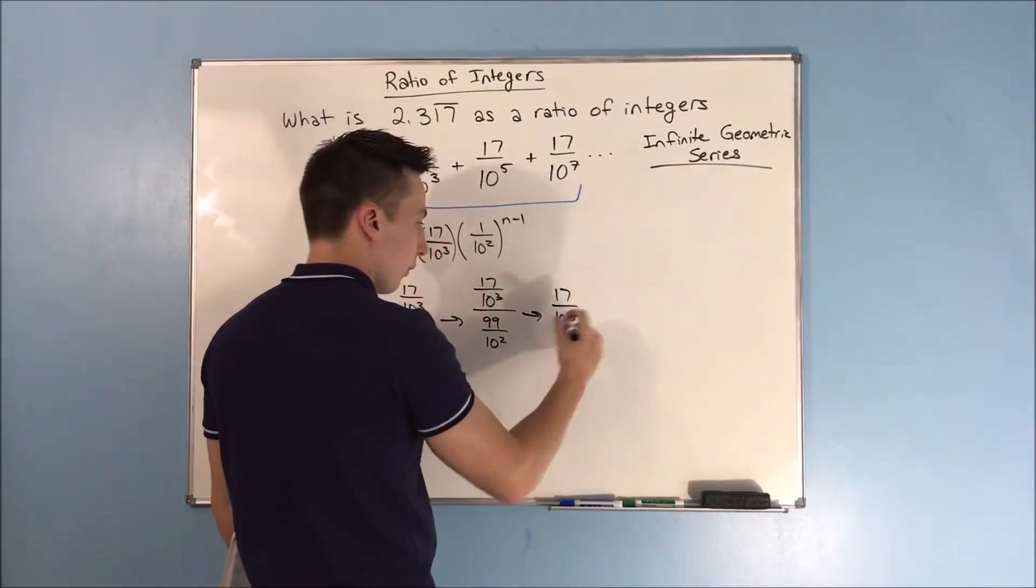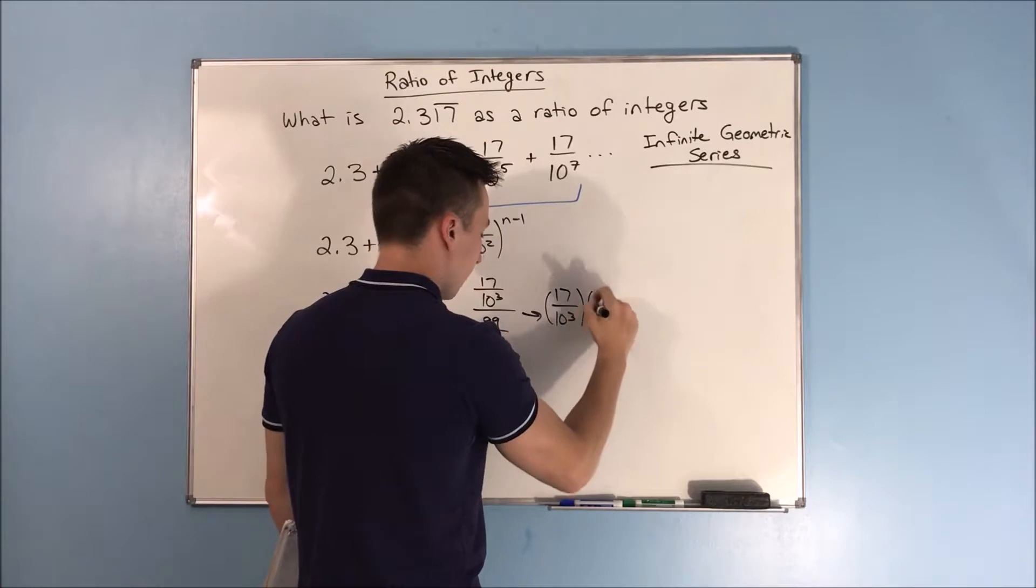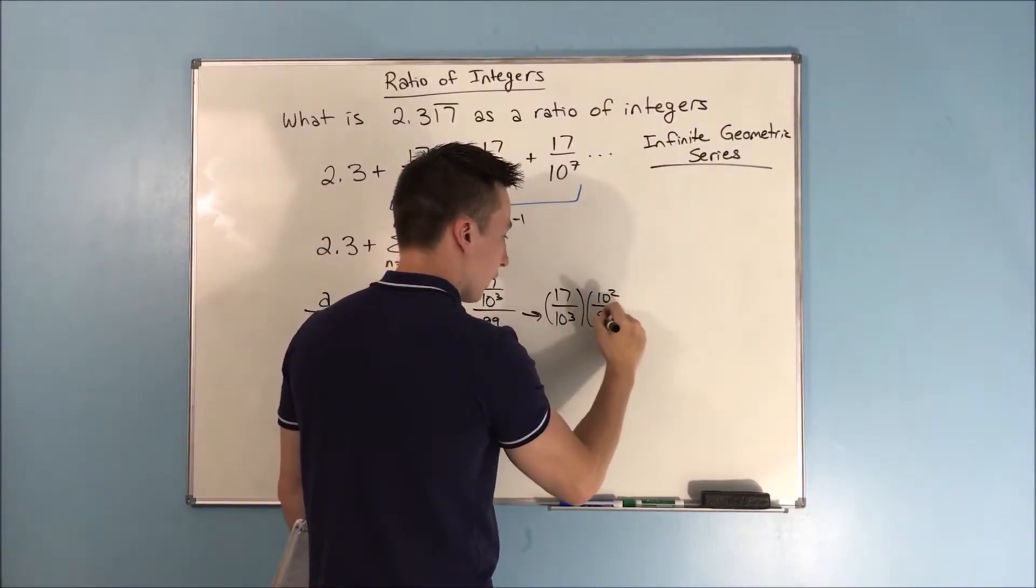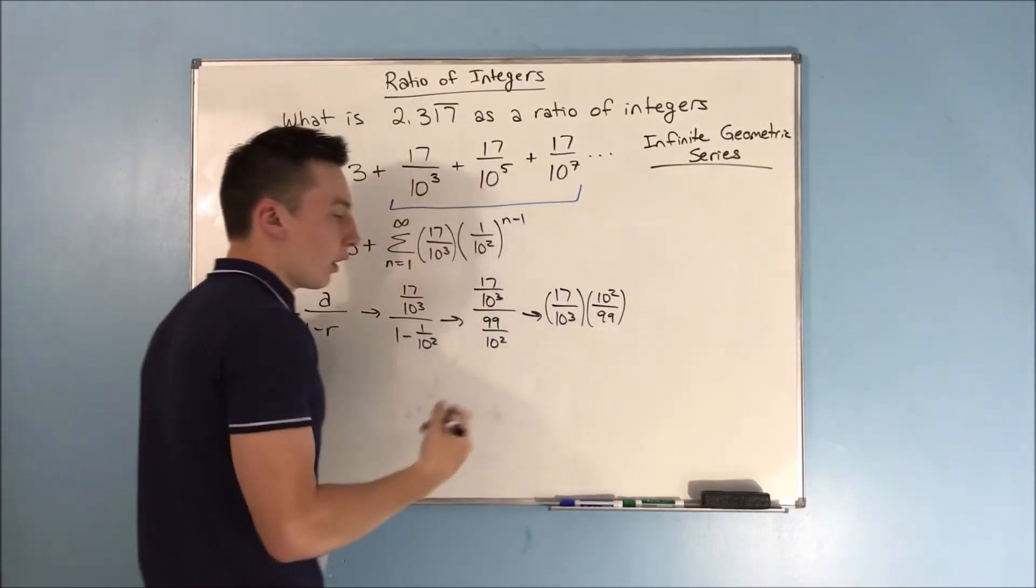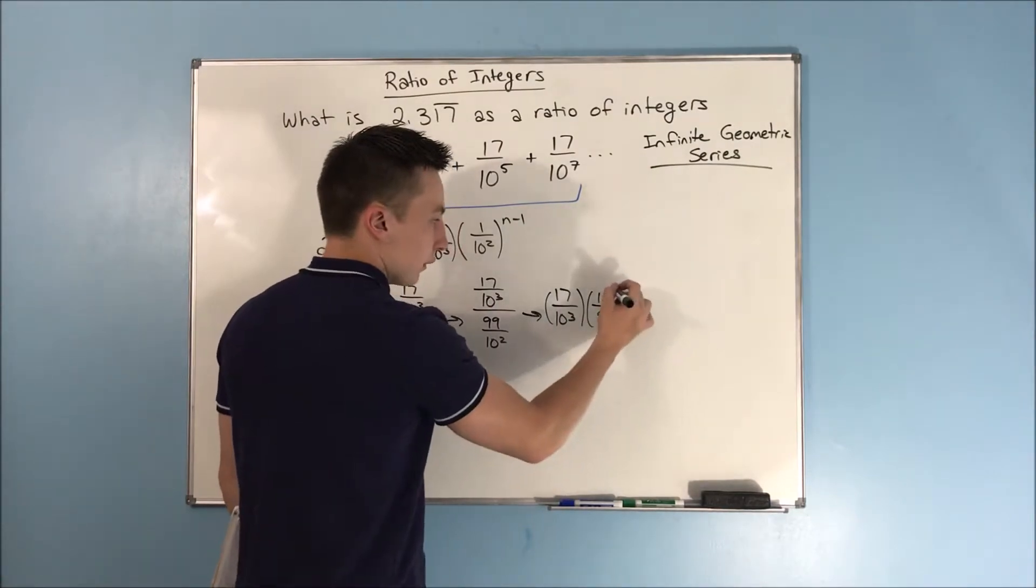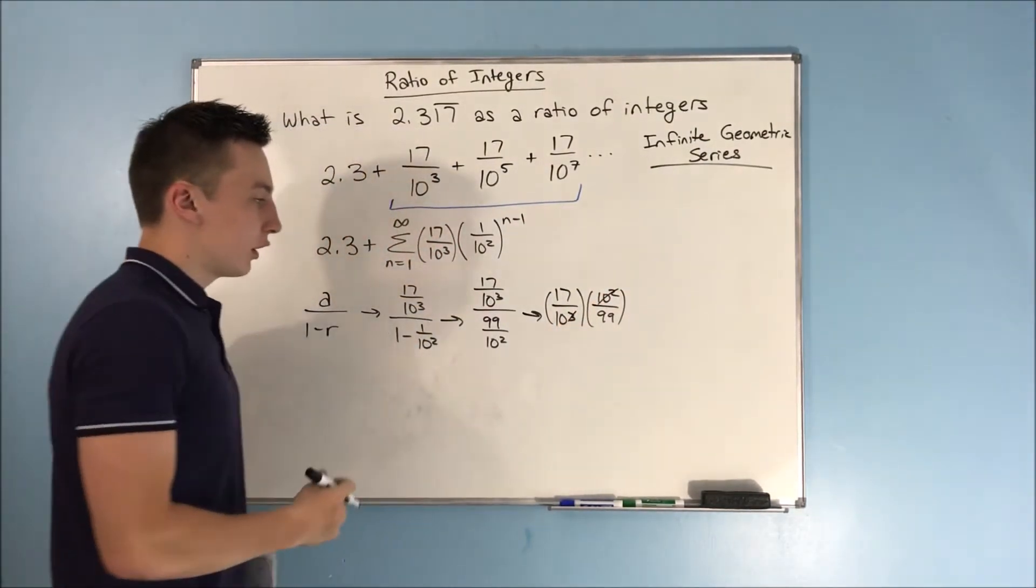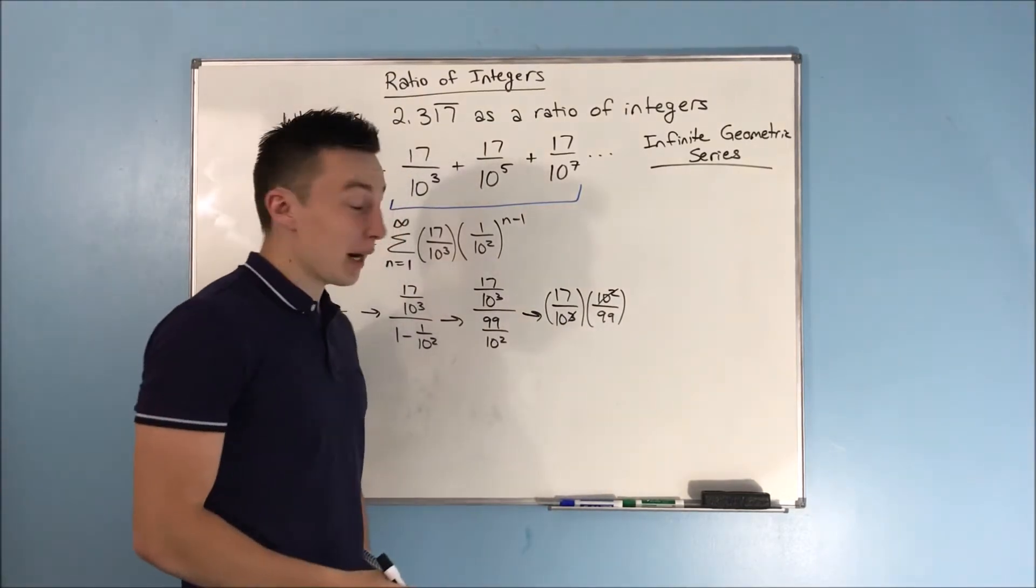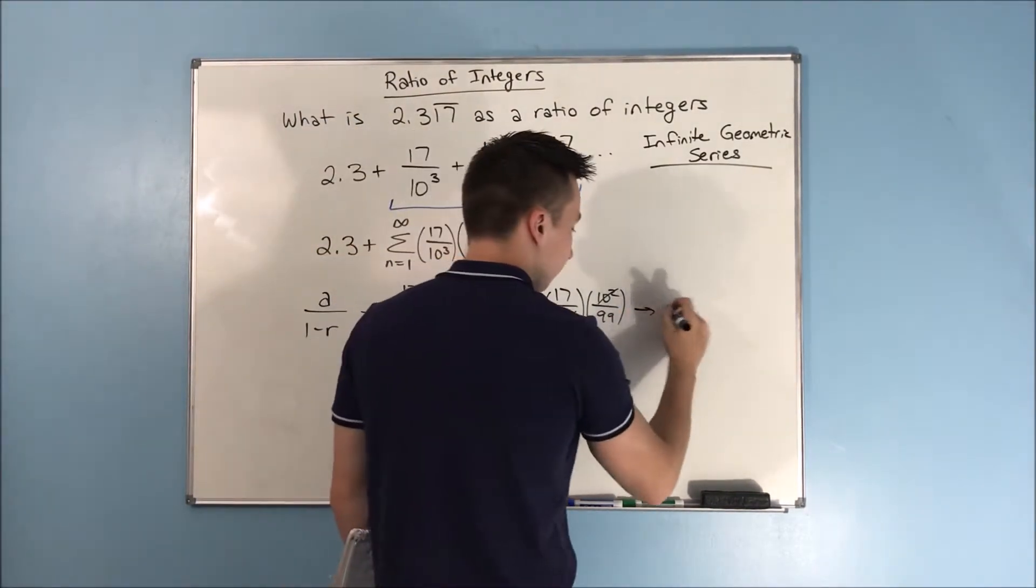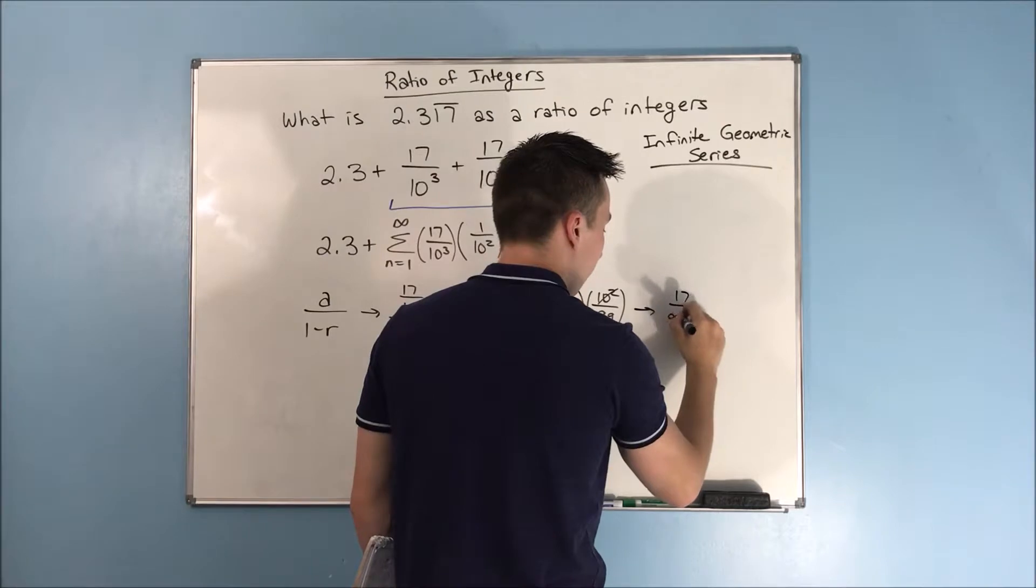You end up with 17 over 10³ times 10² over 99. This 10² is going to cancel out with the 10³, and you're just going to be left with a 10 on the bottom. So this becomes 17 over 990.